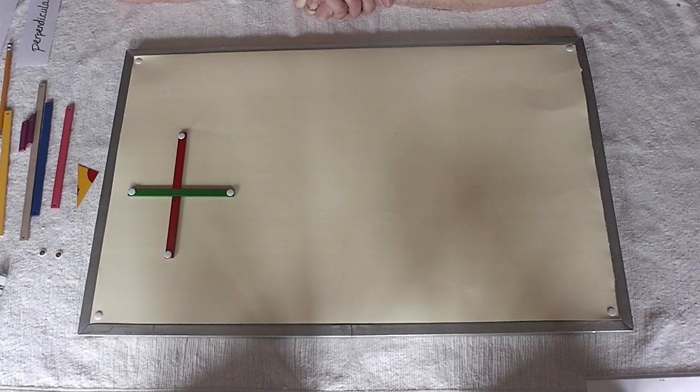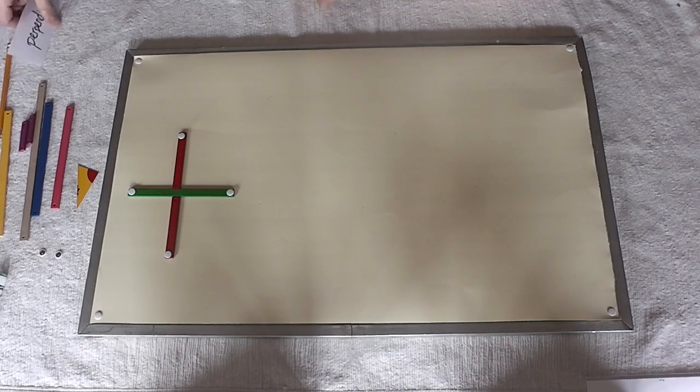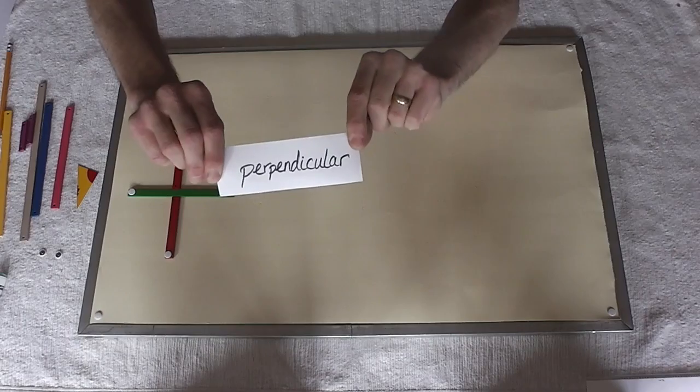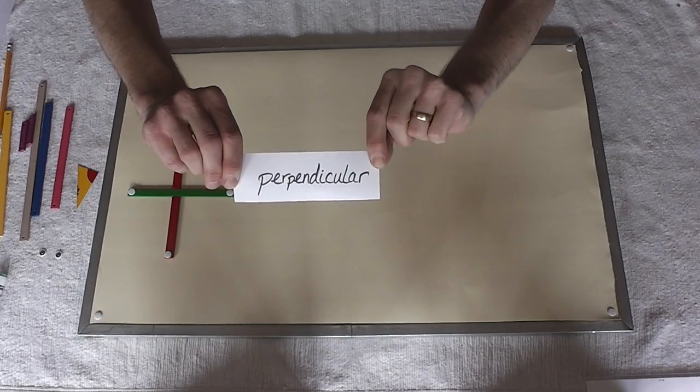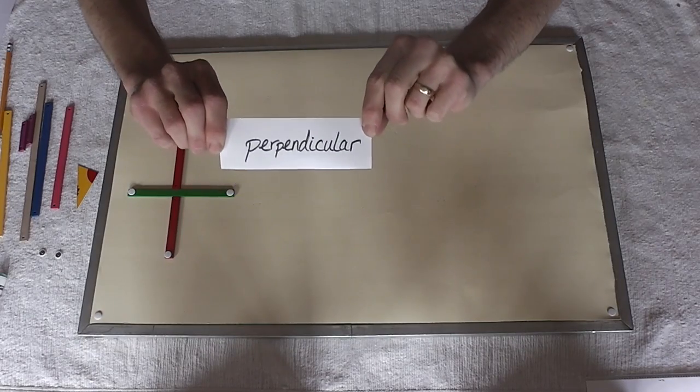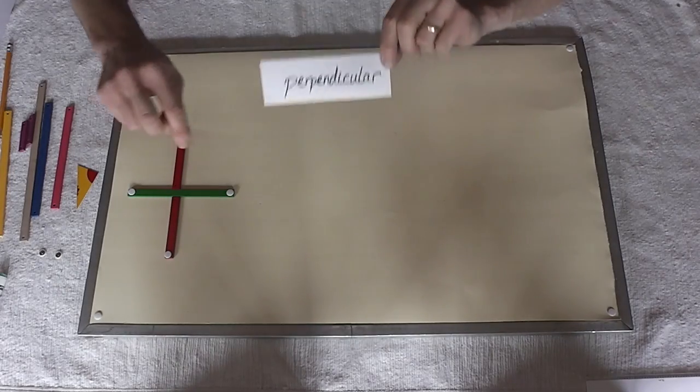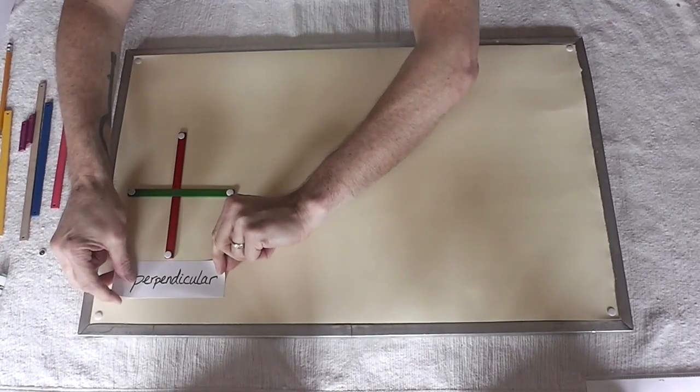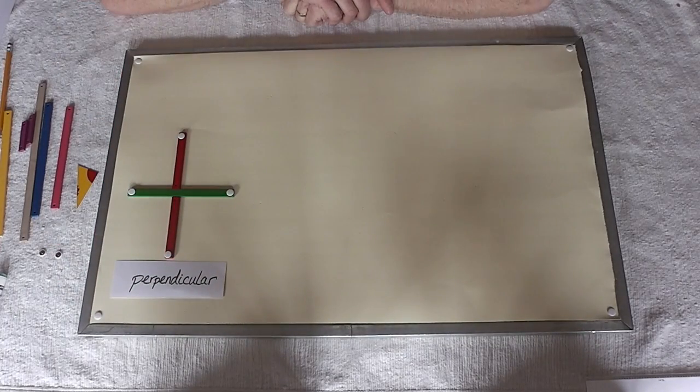When that happens, when the two lines intersect at right angles, they are called perpendicular. Comes from the Latin word perpendicular, meaning plumb line. They are perpendicular, perfectly horizontal, perfectly vertical, forming four 90 degree angles.